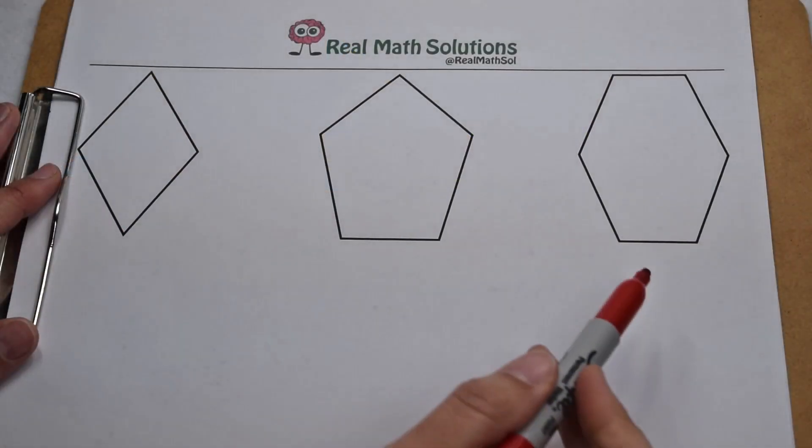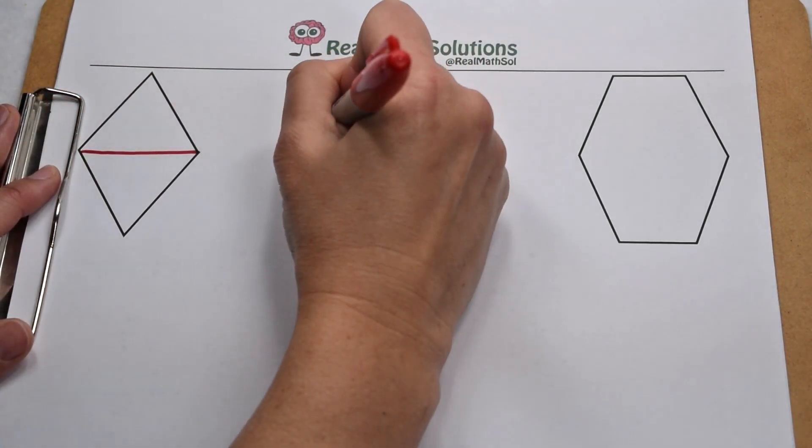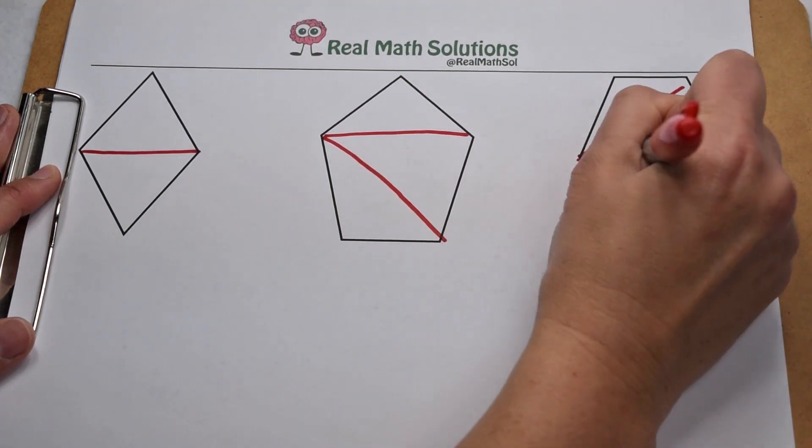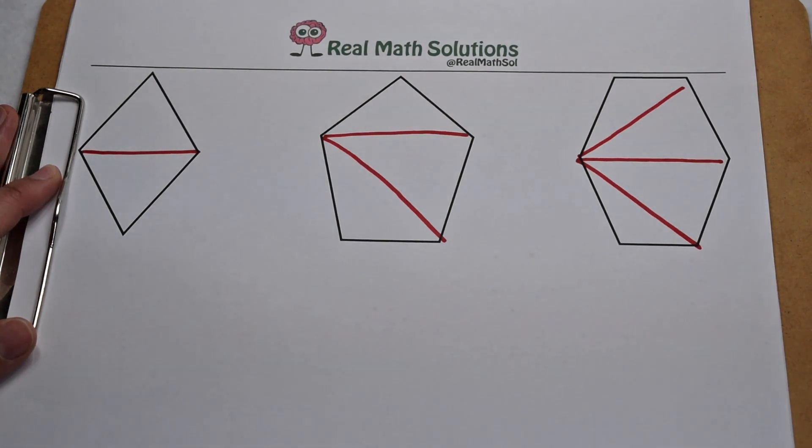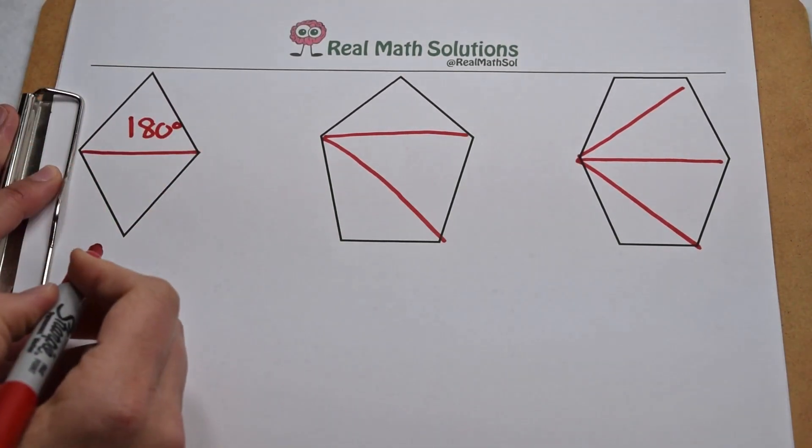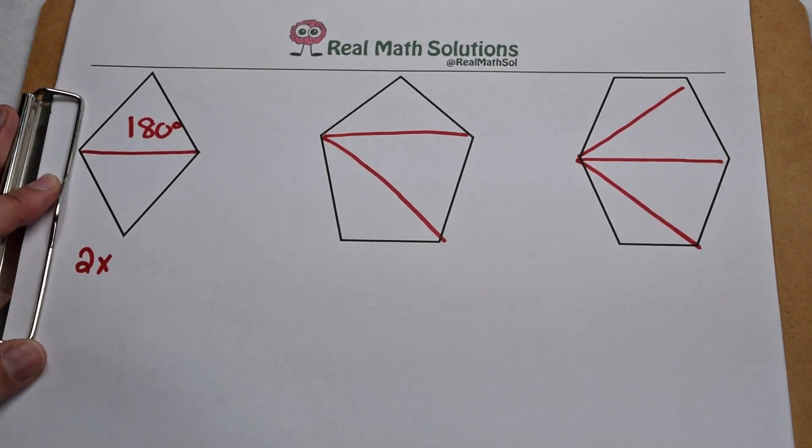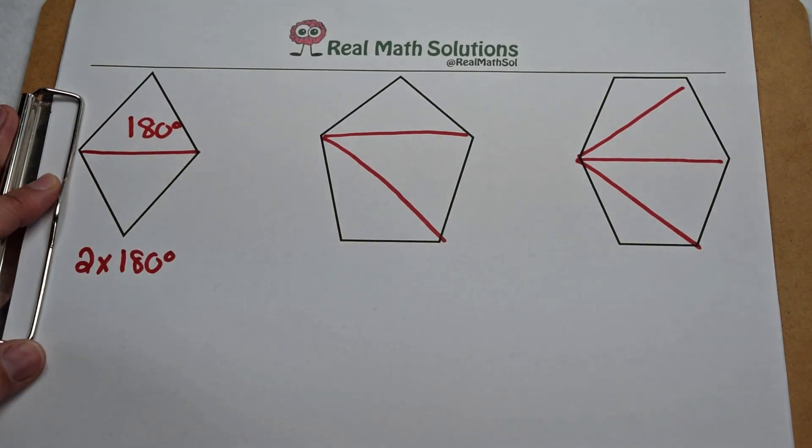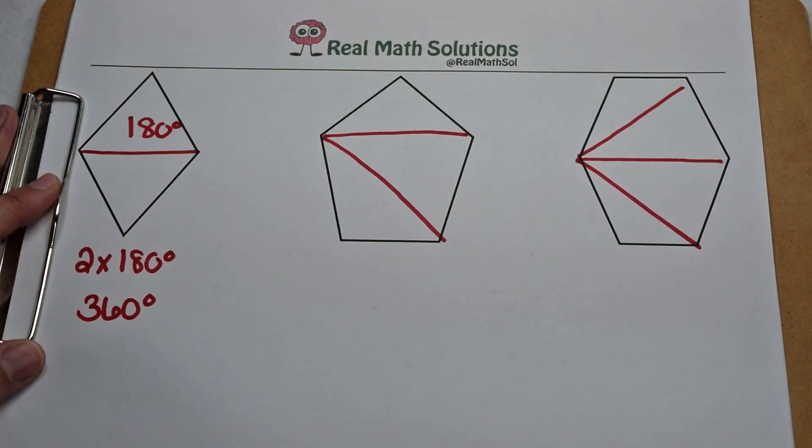Let's look at a few other irregular polygons. Starting at one vertex, we're going to connect that vertex to all the other vertices in our figure. When we do that, we create a set of triangles. We know that each triangle has an interior angle sum of 180 degrees. So we're going to use that to help us find the interior angle sum of the entire figure. Here on the quadrilateral, we've made two triangles. We know each triangle is worth 180 degrees. So 180 degrees times 2 is going to give me an interior angle sum of 360 degrees on the quadrilateral.